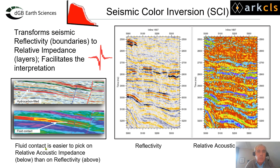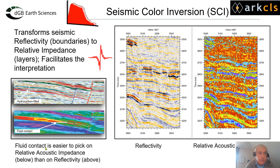An example of seismic colored inversion: this changes the reflectivity into layer boundaries, which is relative acoustic or relative elastic impedance, and it facilitates the interpretation. On the left we see a seismic section with a fluid fill anomaly — hydrocarbons — and it's very difficult to see where the hydrocarbons are and the contacts are not very visible. But after conversion to relative acoustic impedance, we clearly see the anomaly and the contact. That is really why you are going to do seismic inversion, and colored inversion is the simple easy way to get to this mode of interpretation.